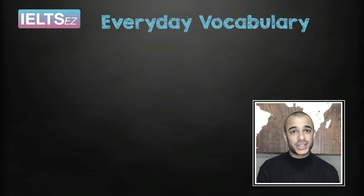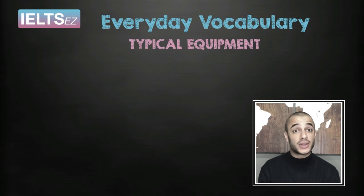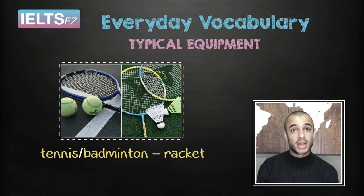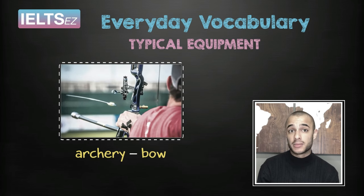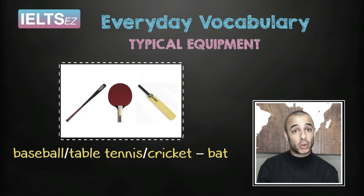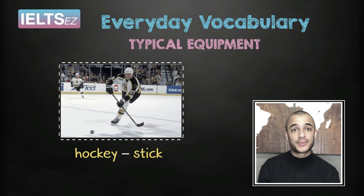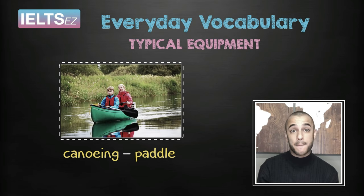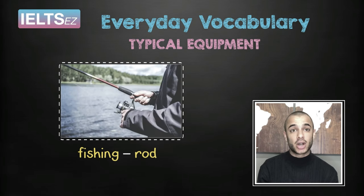Now let's have a look at some more sports and activities and some of the typical equipment that is used for each one. Look at the words and pictures that appear together and say after me. Golf — club. Tennis and badminton — racket. Archery — bow. Baseball and tennis or cricket — bat. Hockey — stick. Snooker or pool or billiards — cue. Canoeing — paddle. Fishing — rod.